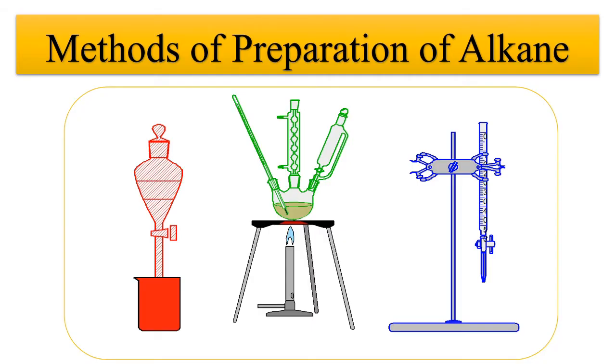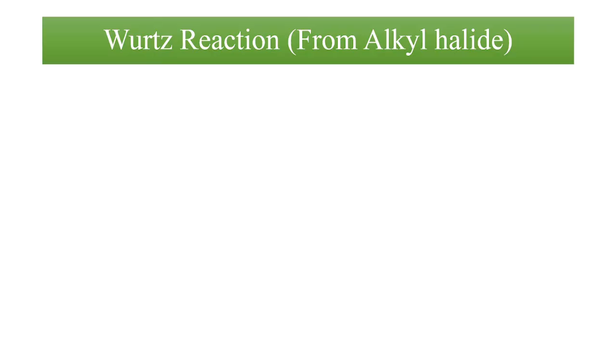Hello students, we are discussing methods of preparation of alkanes. In this video, we will discuss Wurtz reaction, which is the preparation of alkane from alkyl halide. Now, alkyl halide is the compound containing the alkyl group attached to the halogen. Instead of X, we can take chlorine, bromine, or iodine. We generally don't take alkyl fluorides for this reaction because the R-F bond is very strong and difficult to break.